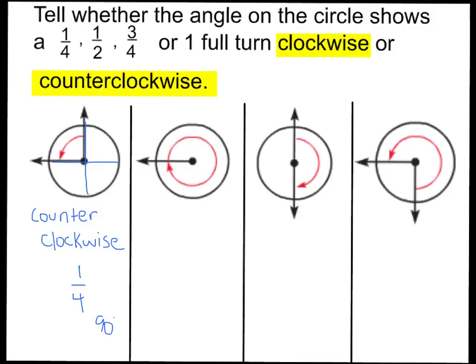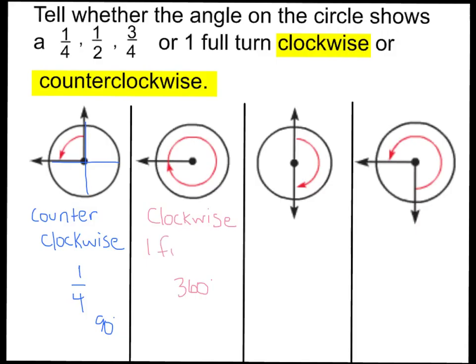Now let's look at number two. The arrow is rotating in the clockwise direction — starting here and going all the way around and back again. So you should have said clockwise for number two. It made a full 360-degree turn, which is one full turn.